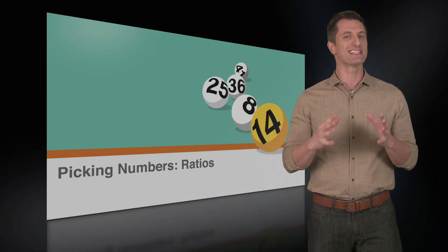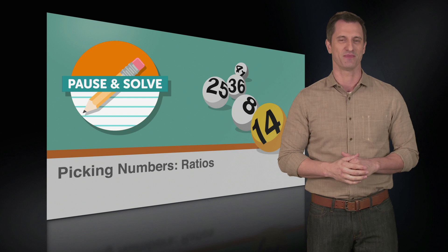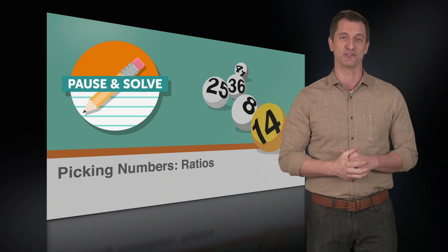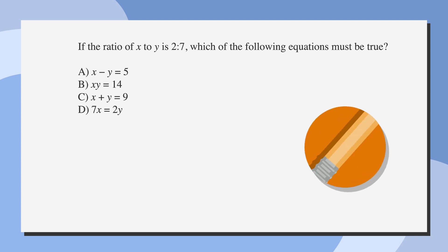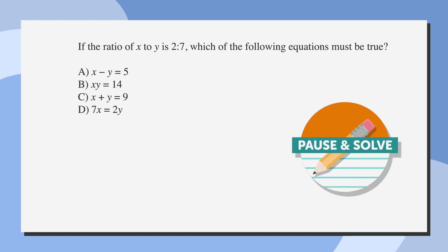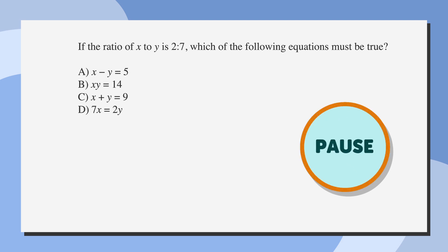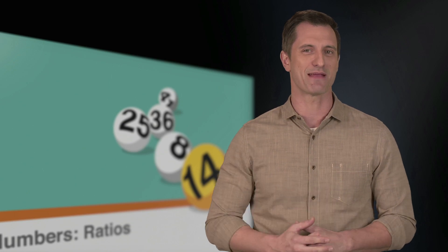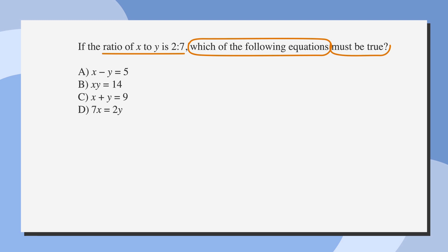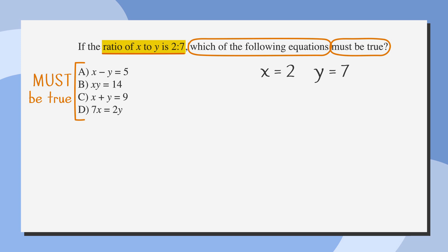Now let's look at an SAT problem that's a little bit harder. Let's make this one a pause and solve. Grab some paper and a pencil to solve the problem on your own, and then we'll go through it together. If the ratio of x to y is 2 to 7, which of the following equations must be true? Use all the strategies we've talked about and give it your best shot. Based on the given ratio, we say that x is equal to 2 and y is equal to 7.